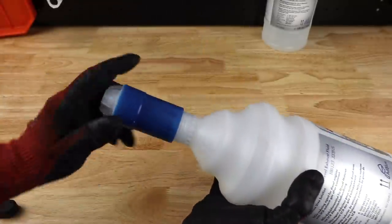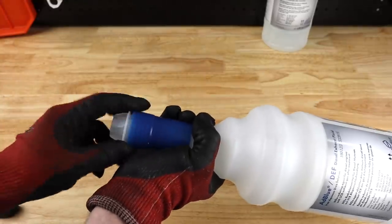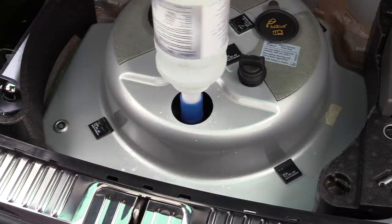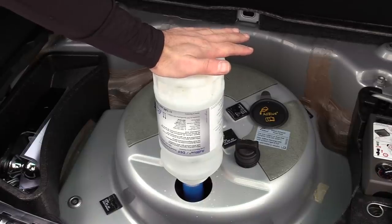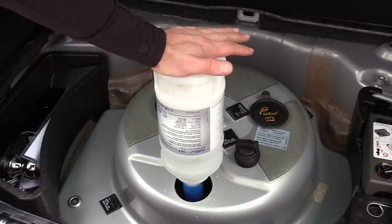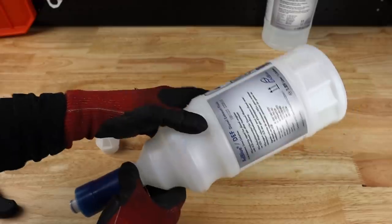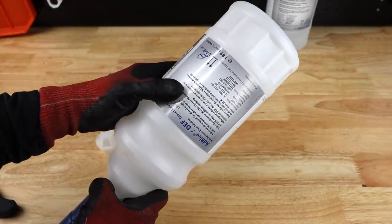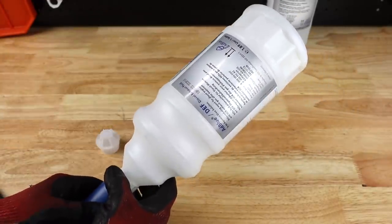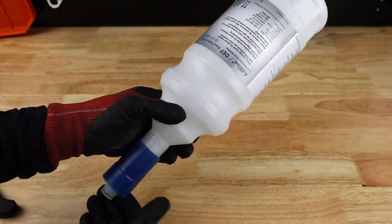This is awesome because basically the way this works is you unscrew the lid, you screw it into the AdBlue tank, you push it down, and it fills your AdBlue tank without spilling. If the tank doesn't need this entire container which is about half of a gallon, it'll just stop filling so you can't overfill the tank.